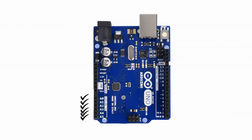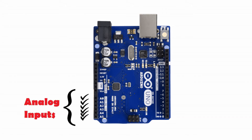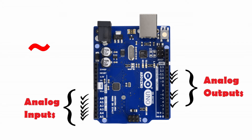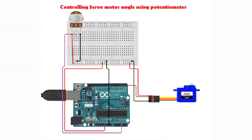First, let's look at the analog input and output pins of the Arduino Uno. As you can see, A0 to A5 are analog input pins, and pin numbers 3, 5, 6, 9, 10, and 11 are marked with a tilde symbol, which means these pins can be used as pulse width modulation output — or in other words, as analog output pins.